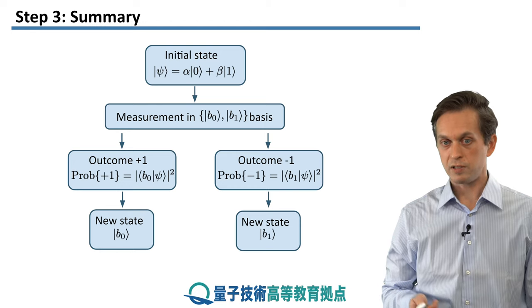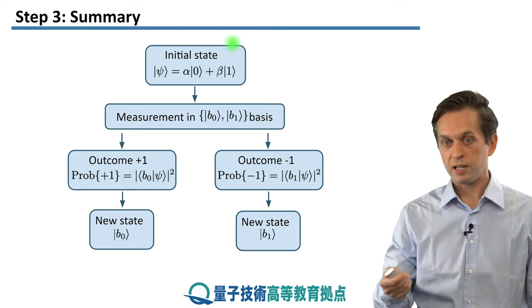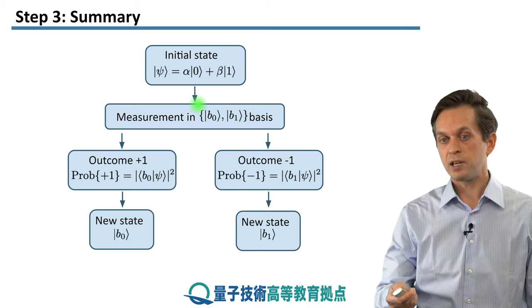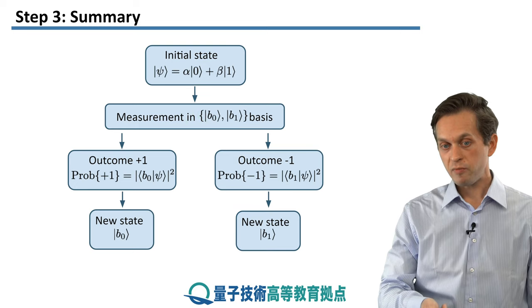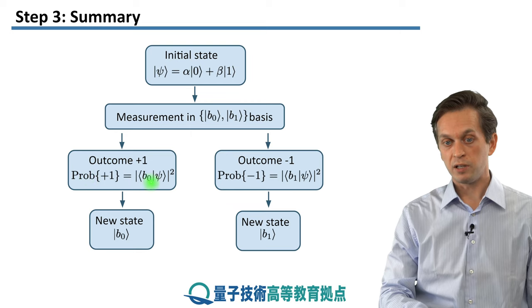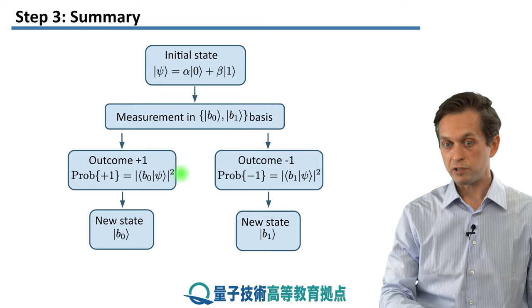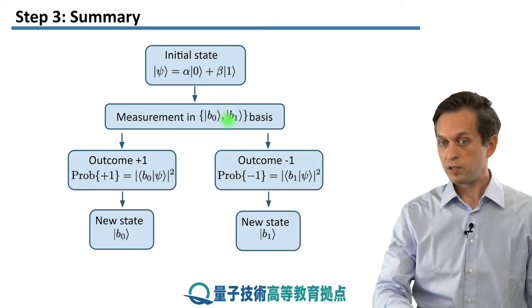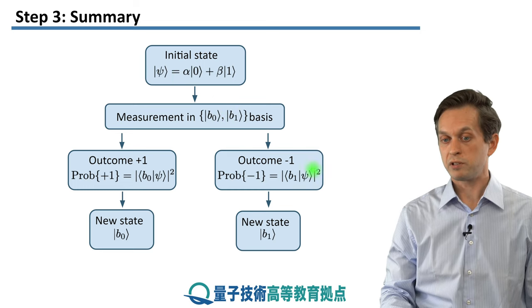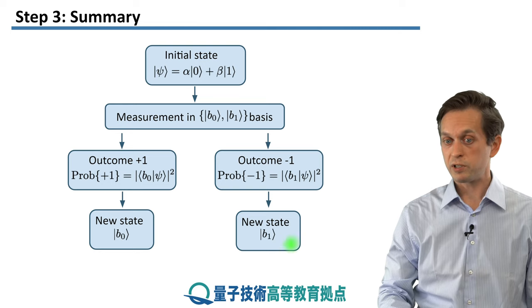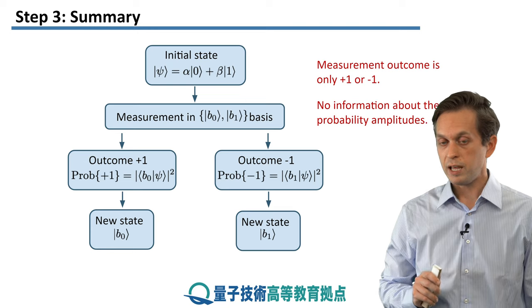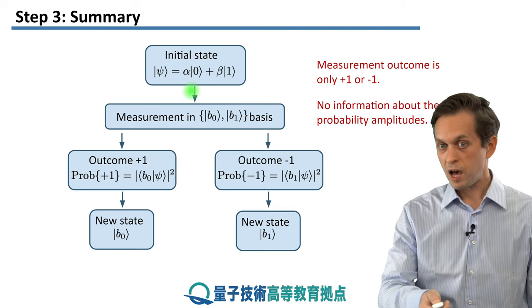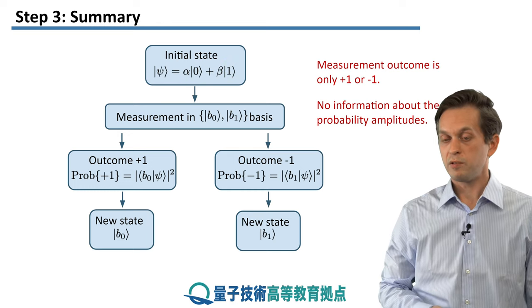To summarize the measurement process: you start with some initial state written in a basis — here in the computational or Pauli z basis — and you choose to perform a measurement in a given basis described by basis states B0 and B1. If your outcome is +1, which happens with probability given by the inner product between B0 and the original state modulus squared, then your post-measurement state is B0. If you get the −1 outcome, with probability given by the inner product of B1 with the initial state psi modulus squared, then your post-measurement state is B1. Importantly, the measurement outcome is only +1 or −1 and does not give you information about the probability amplitudes alpha and beta. To gain information about the probability amplitudes, you have to tune in to the next step.